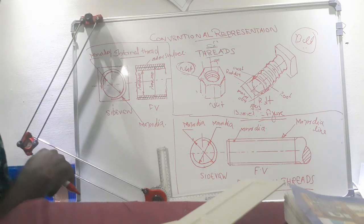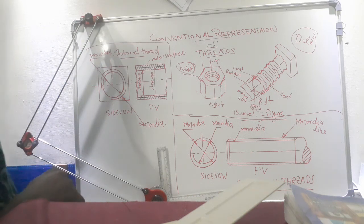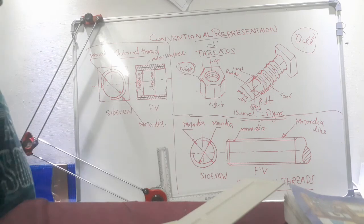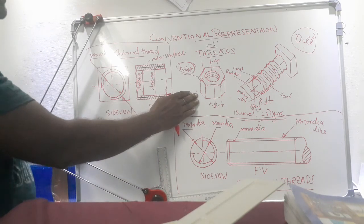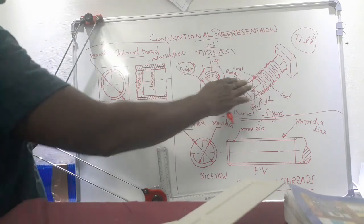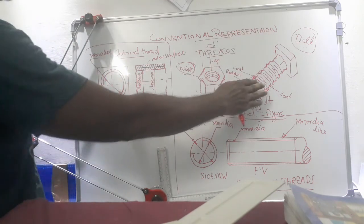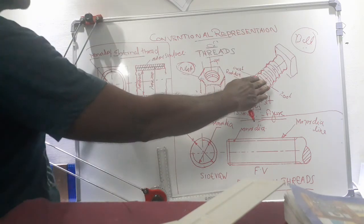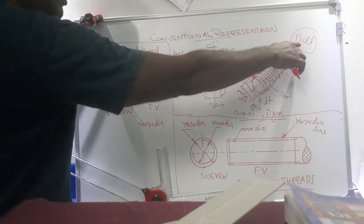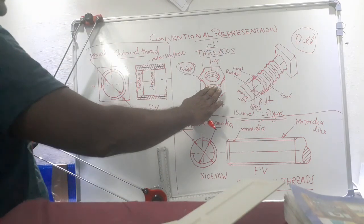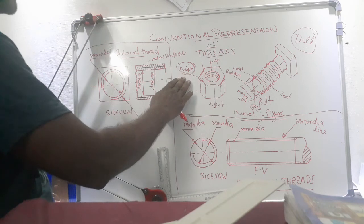Dear students, in this video I am trying to explain how to draw the conventional representation of smooth threads. This figure shows the isometric figure of external and internal threads. This is an example of external threads, called a bolt, and this is an example of internal thread, called a nut.